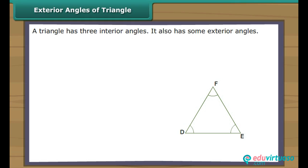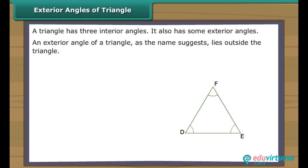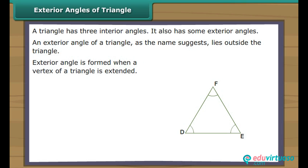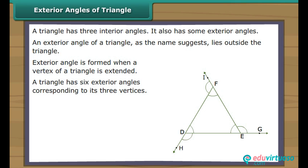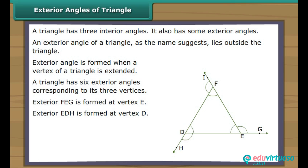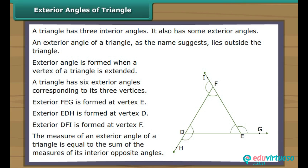Exterior angles of a triangle. A triangle has three interior angles and also some exterior angles. An exterior angle, as the name suggests, lies outside the triangle. It is formed when we extend a vertex of a triangle. A triangle has six exterior angles corresponding to its three vertices. If we extend vertex E of triangle FDE, exterior angle FEG is formed. Similarly, when we extend vertices D and F, exterior angles EDH and DFI are formed. The measure of an exterior angle of a triangle is equal to the sum of the measures of its interior opposite angles. In the figure, angle FEG is equal to the sum of angles FDE and DFE.